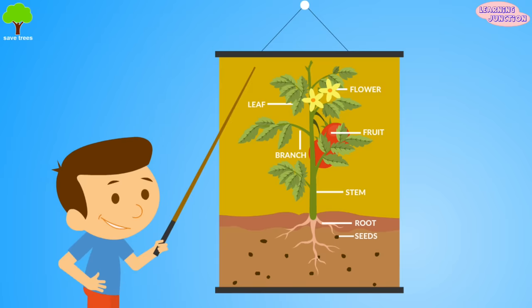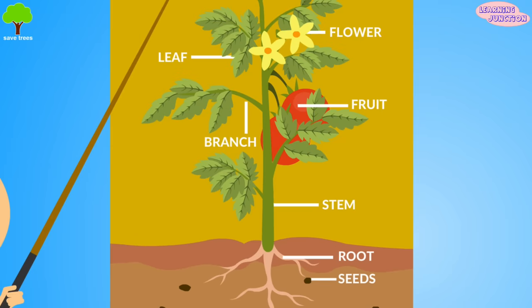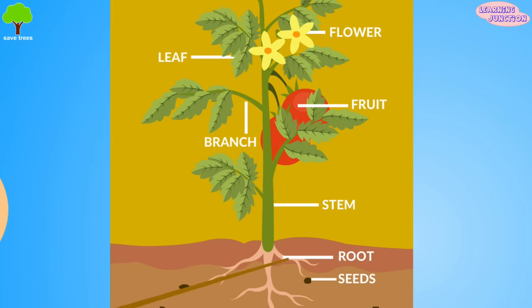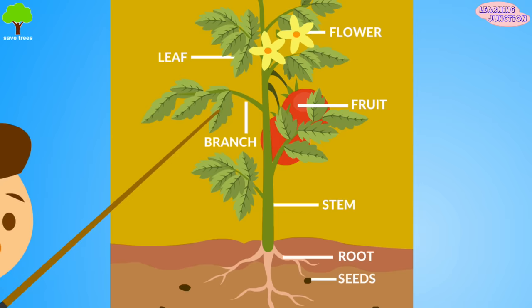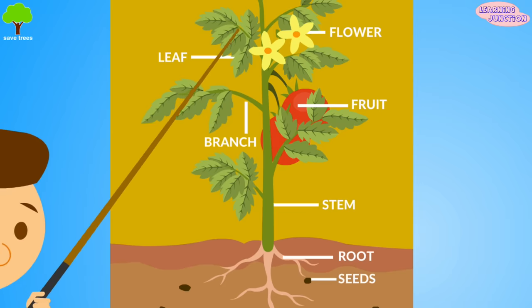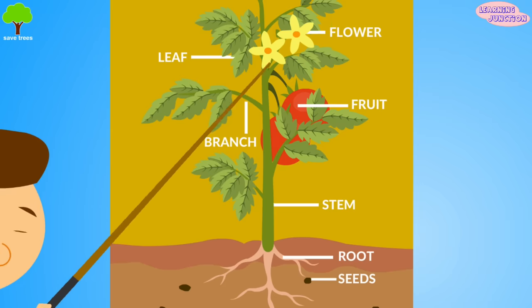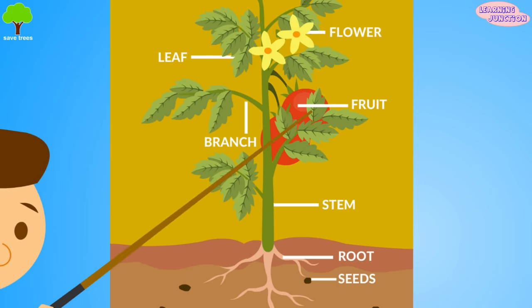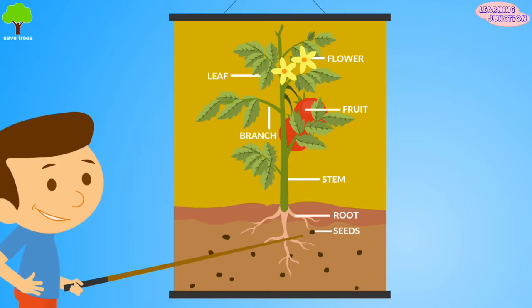Here is the diagram for your review. Look carefully. This is root, the stem, branch, leaf, flower, and fruit. And these are seeds.